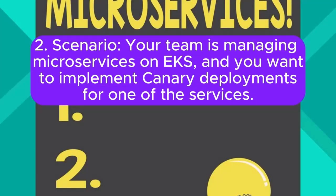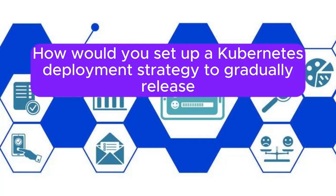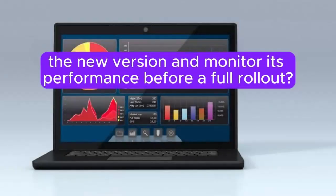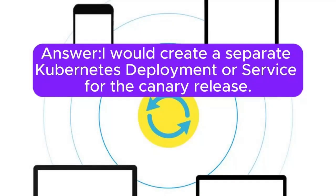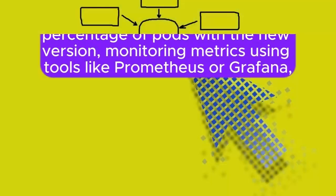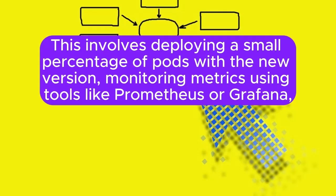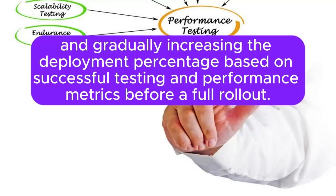Scenario 2: Your team is managing microservices on EKS, and you want to implement canary deployments for one of the services. How would you set up a Kubernetes deployment strategy to gradually release the new version and monitor its performance before a full rollout? Answer: I will create a separate Kubernetes deployment or service for the canary release. This involves deploying a small percentage of pods with the new version, monitoring metrics using tools like Prometheus or Grafana, and gradually increasing the deployment percentage based on successful testing and performance metrics before a full rollout.